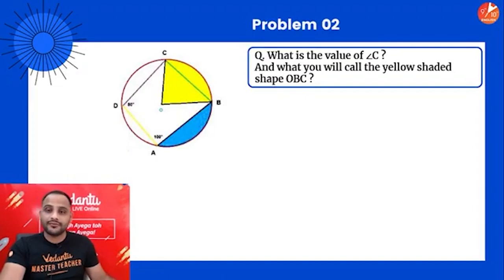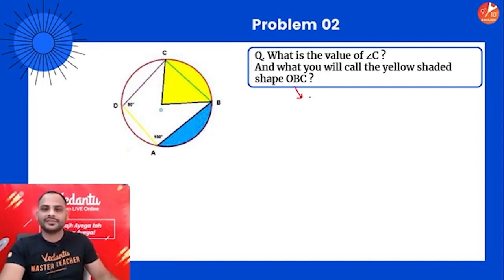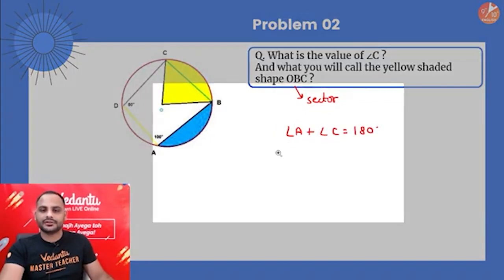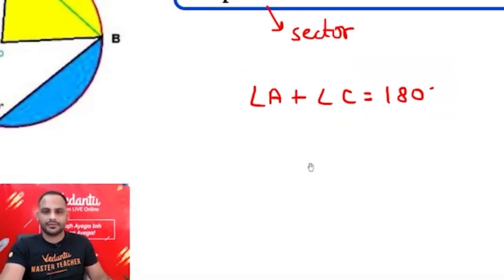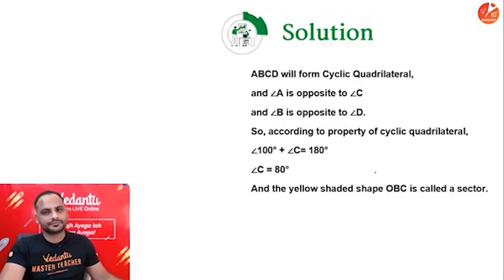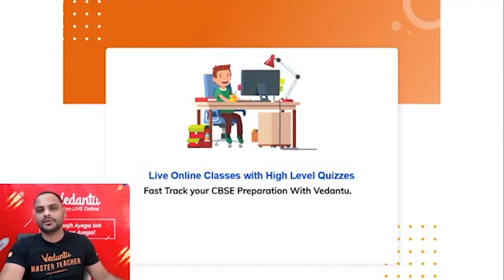What is the value of angle C, and what is the yellow-shaded shape OBC? The shape OBC is a sector of the circle. For angle C: angle A + angle C = 180° (opposite angles of a cyclic quadrilateral are supplementary). Angle A is 100°, so angle C = 80 degrees.